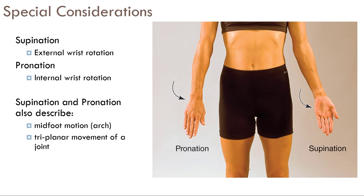There are special considerations in these planes. Supination and pronation are used for the wrist, but the same terms are used for the foot and for kinetic chain assessment — three different uses in anatomy, which is confusing. Wrist supination is presenting your palm upward, like holding a bowl of soup with a bent elbow, and pronation is how you would pour that soup out.